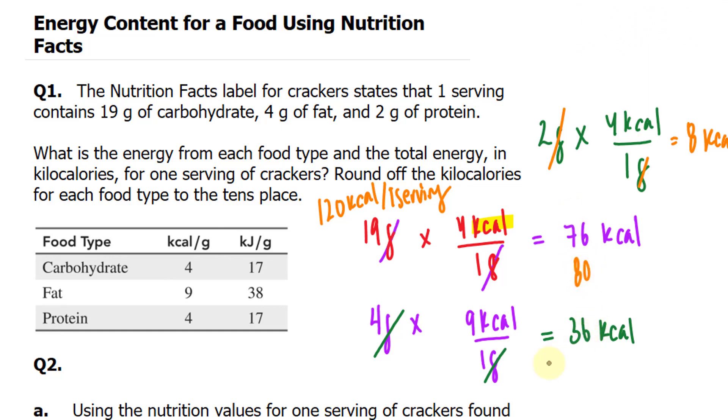Similarly, this 6 is greater than 5. This number would go up to 40. And over here, this number being 8 would go up to 10. So you could also add 80 plus 40 plus 10, and you would have gotten 130 kilocalories per 1 serving according to what they ask for here.